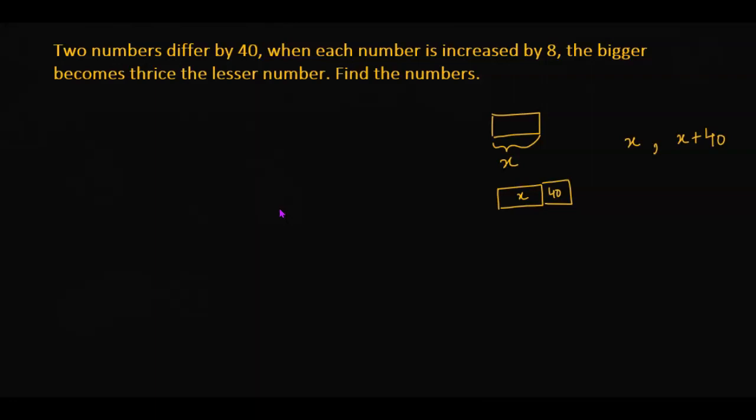Now let's read the next part: when each number is increased by 8. That means we have to increase each number by 8. So if this increases by 8, I am adding 8 to this, and I'm also adding 8 to the other number.